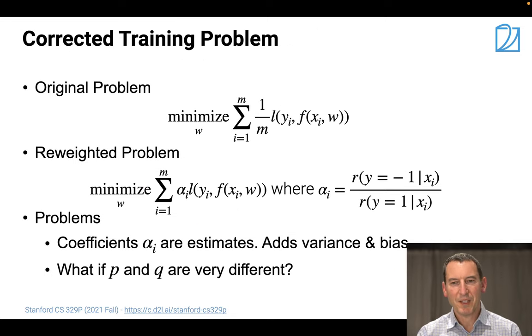Now, let's look at what happens, right? So the original problem is just minimizing 1 over m, l(y_i, f(x_i,w)). This becomes changed into a weighted problem where we now have those weights alpha_i, which tell us how much more typical in the test set a particular observation is than in the training set.